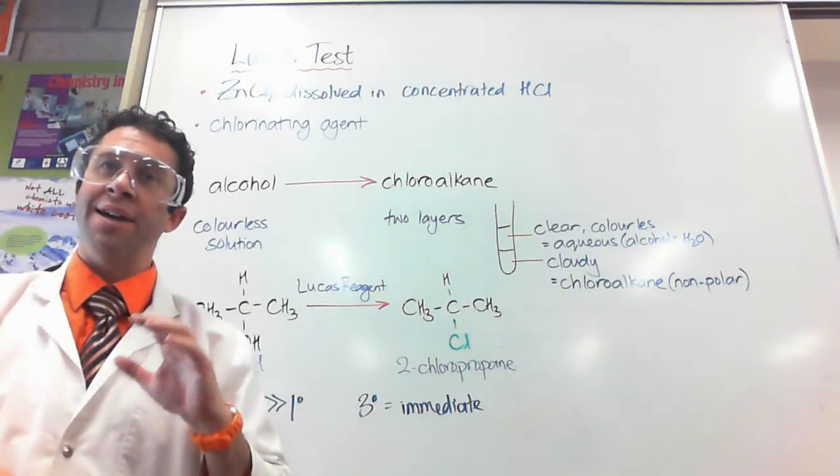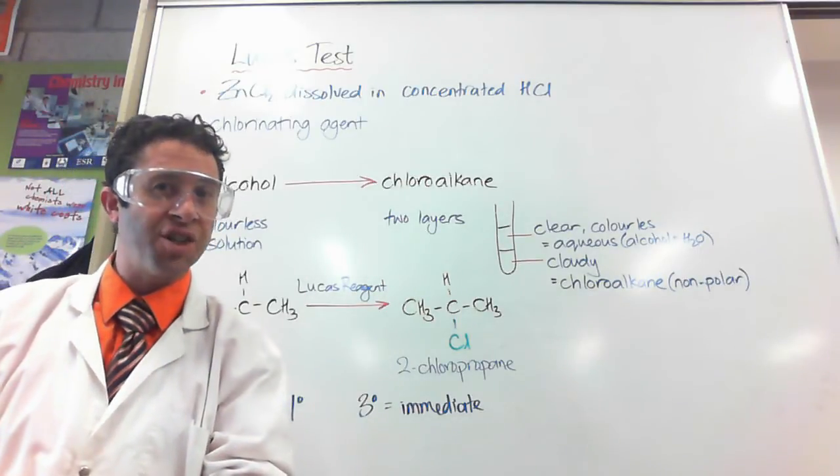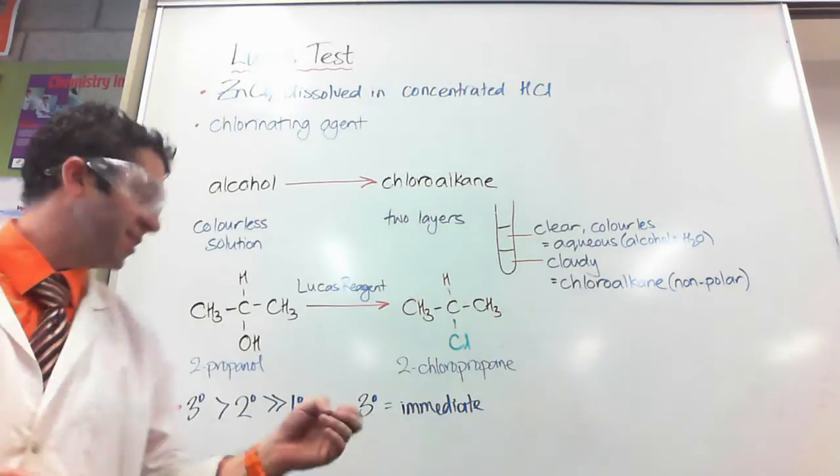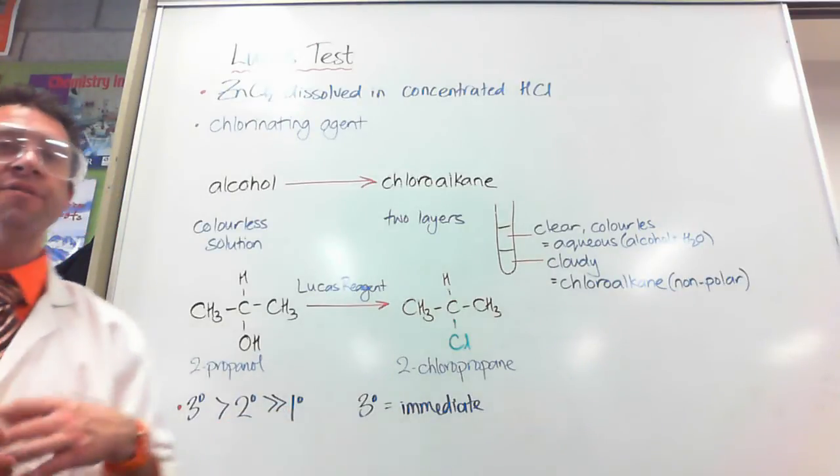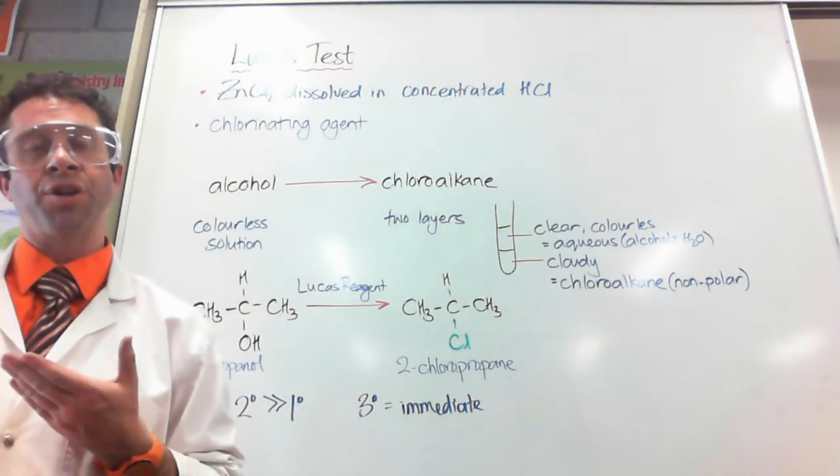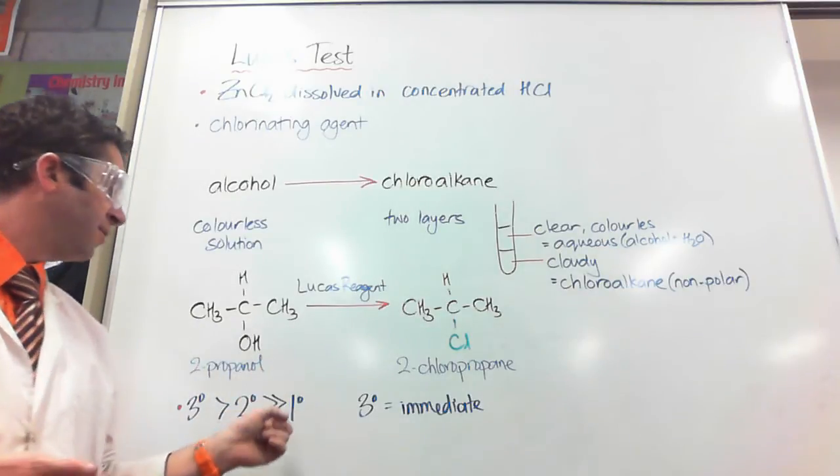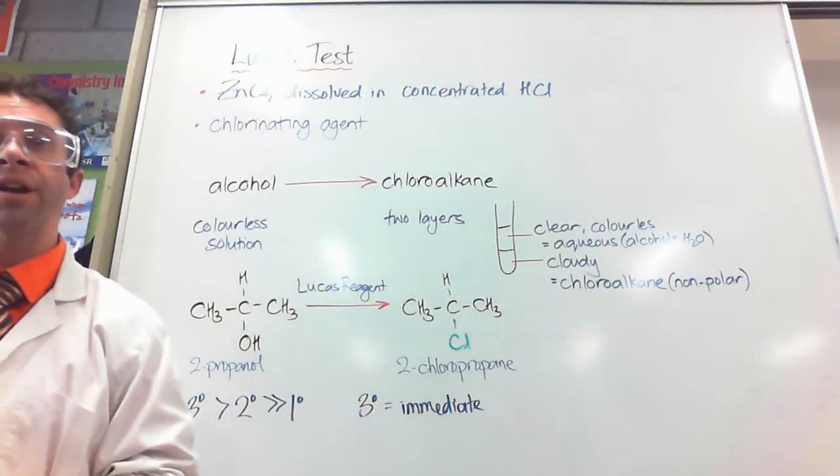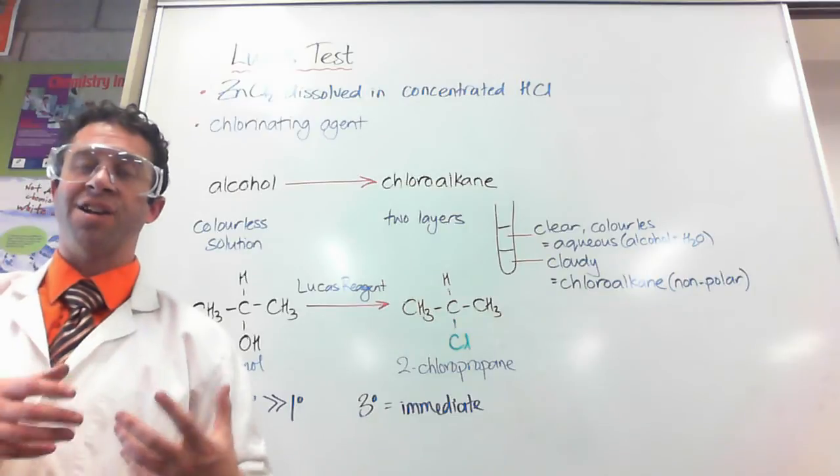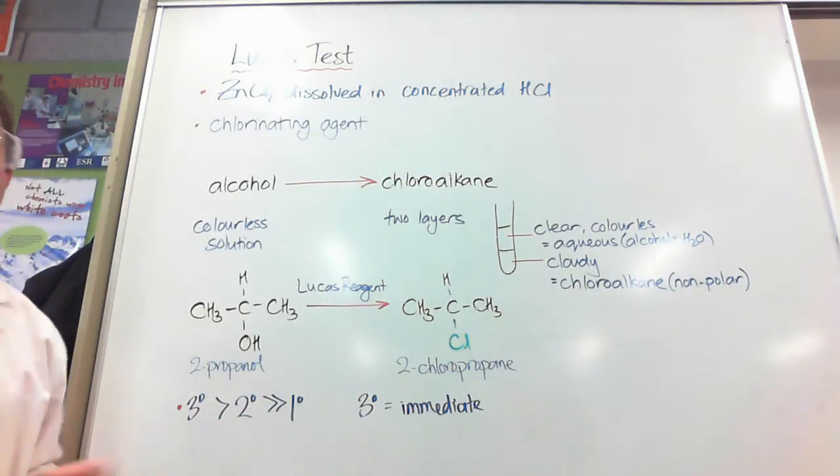If it forms two layers, but can cause a colour change with an oxidising agent, then it's secondary. If I've given it five minutes and I still don't have two layers, then I can infer quite safely that it's a primary alcohol, because its rate of reaction is so much slower than the other two.